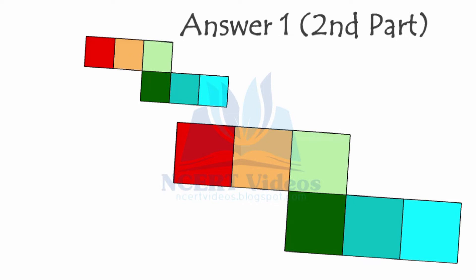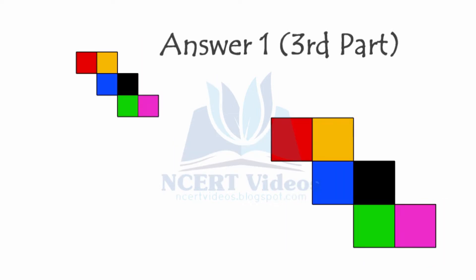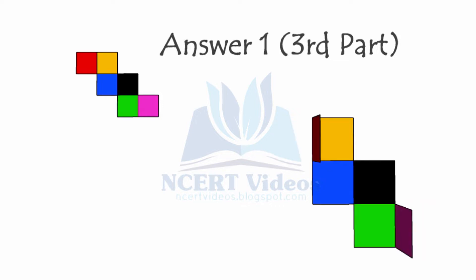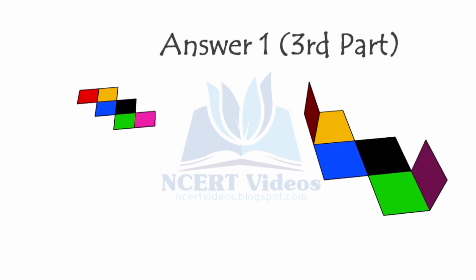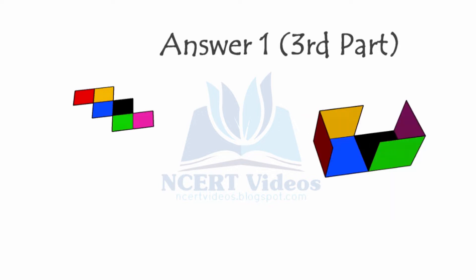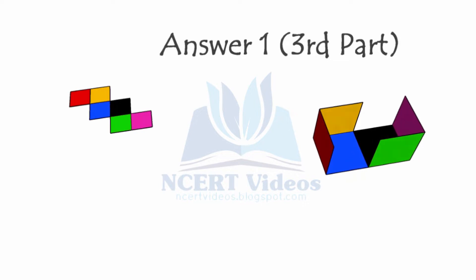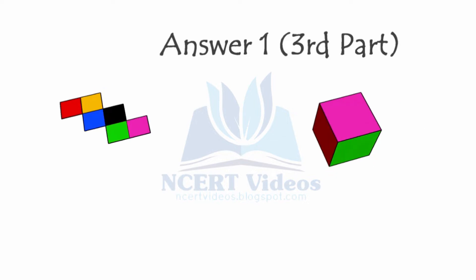Here we have the third net. Note that numerous nets can make any 3D figure - it is not like only one net can make a 3D object; there are many nets possible. First we will fold the red square and the pink square as shown, then fold from yellow and green, and now fold from blue and black. We can see that we are able to construct a cube out of it. So this is our third net and we are able to construct a cube.